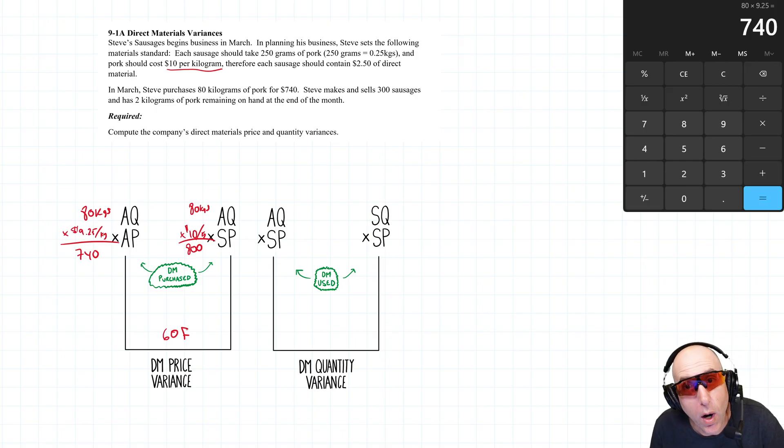Let's go over and do the quantity variance now. Now, we don't use 80 kilograms as our AQ. We have to figure out what is the quantity of material used, not purchased, but used. And this last sentence gives it away. In March, Steve purchases 80 kilograms of pork for $740. Steve makes and sells 300 sausages and has 2 kilograms of pork remaining. Okay, so he bought 80 kilograms. If he has 2 kilograms remaining, he must have used 78 kilograms in making those 300 sausages. So the AQ used, the actual quantity of material used, is 78 kilograms.